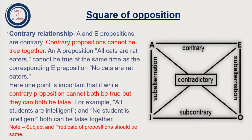First, contrary relationship. Contrary relationship: A and E propositions are contrary. The most important point is that contrary propositions cannot be true together — it means A and E cannot both be true at the same time.